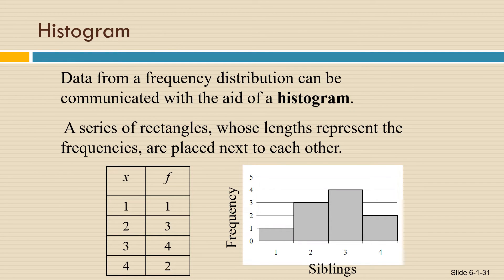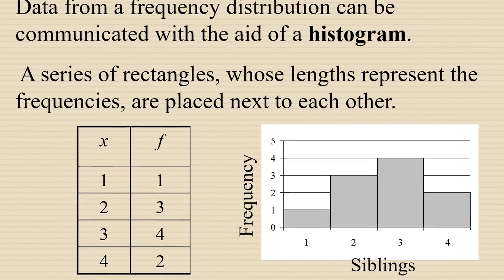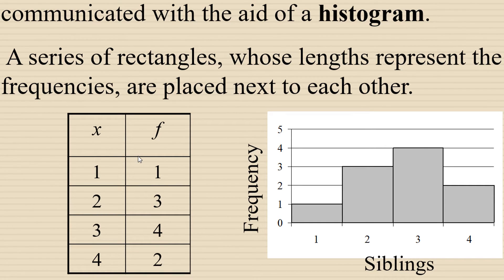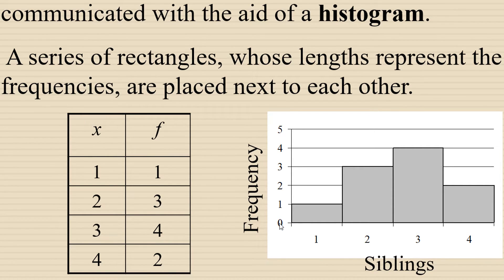The data from a frequency distribution can be communicated with the aid of a histogram. It's a series of rectangles whose lengths represent the frequencies, and they're placed next to each other on a chart. The data from this frequency distribution on the left is displayed in the histogram on the right. The frequency of the data is in the vertical axis going from 0 through 5, which corresponds to the heights of the rectangles.